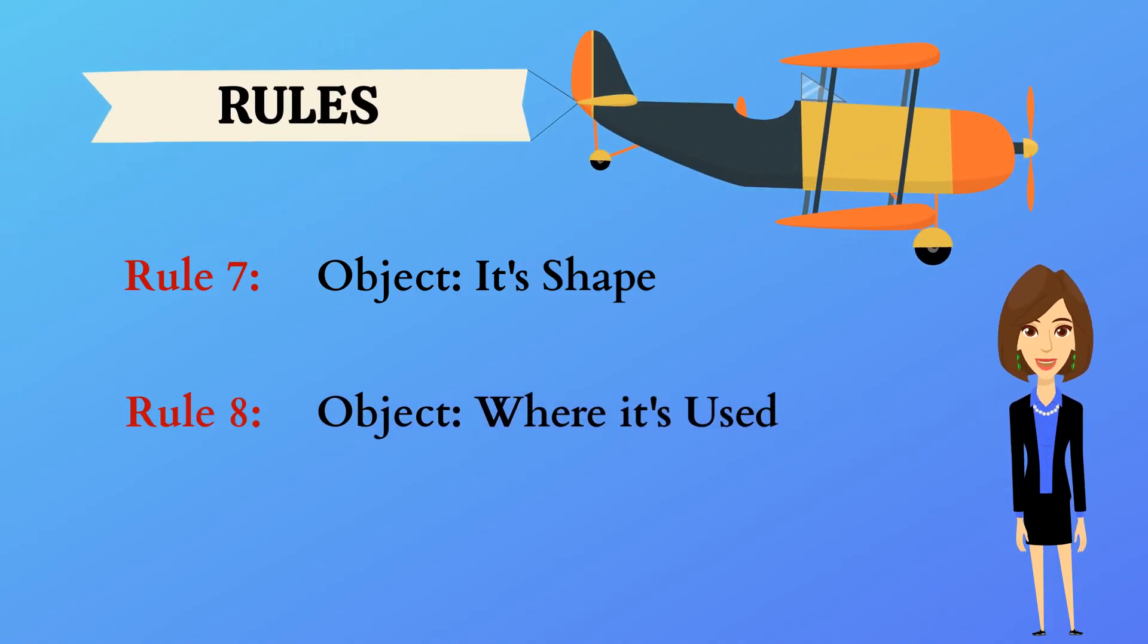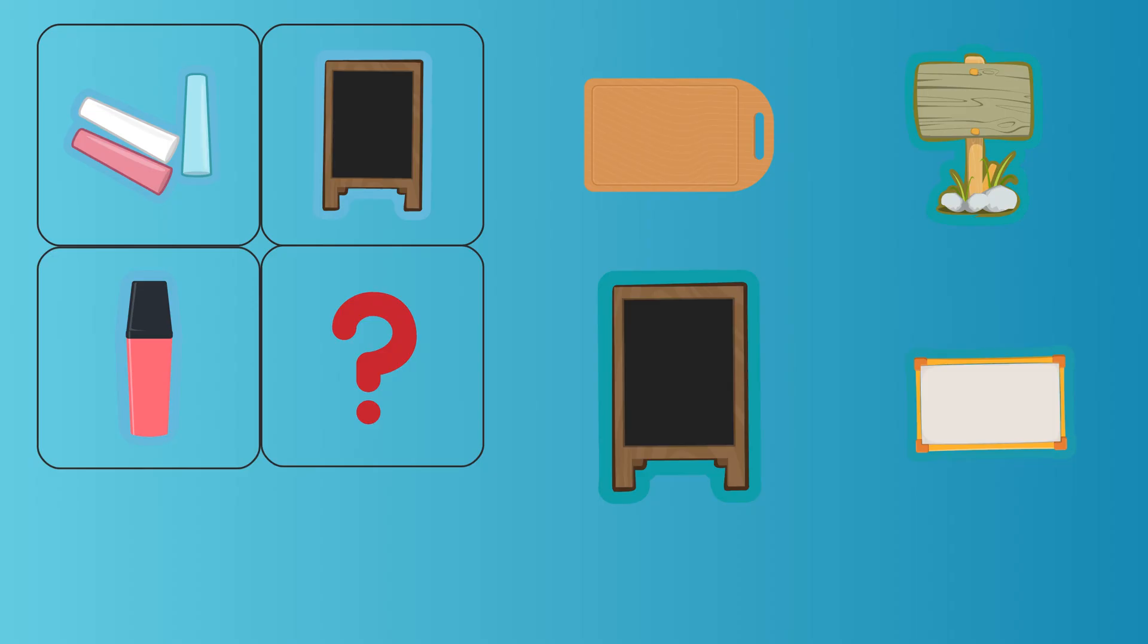Rule 8: Object and where it's used. The first picture is a chalk. The second picture is a blackboard. How are these two related? We use chalk to write on the blackboard. The rule is object and where it's used.